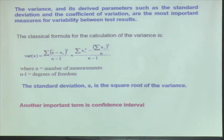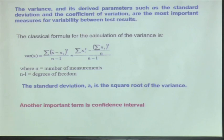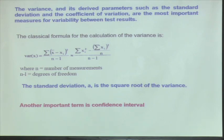Another important term is confidence interval. We frequently use statistical software these days without understanding the basic statistics. At 95% confidence — if you are using Excel with 10 data points and you write STDDEV, you get the standard deviation value, but that is only one sigma. For engineering purposes, for laboratories, we need 2 sigma, which gives you 95% confidence interval — you must multiply it by 2.